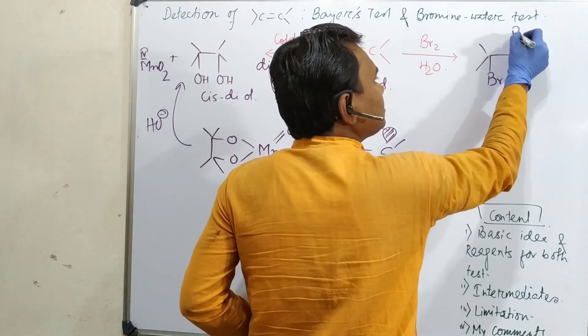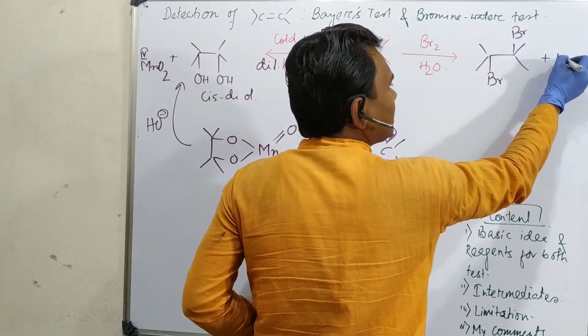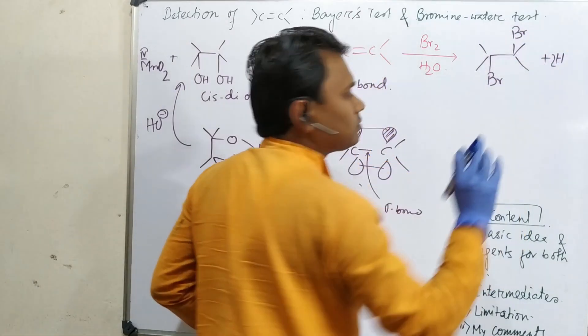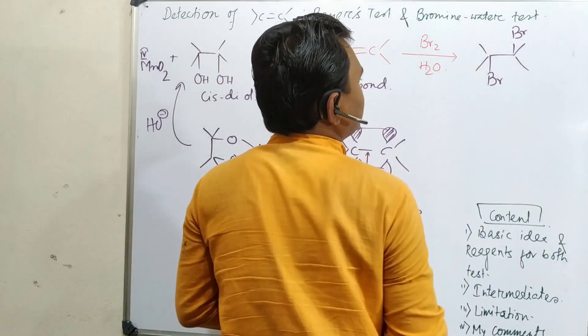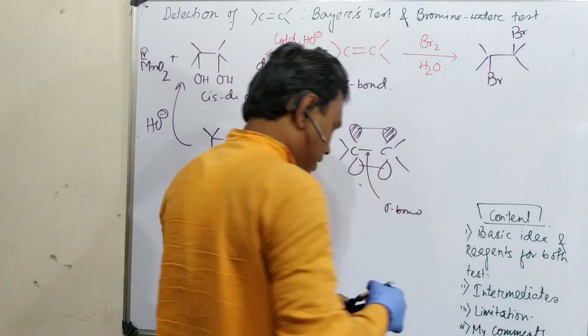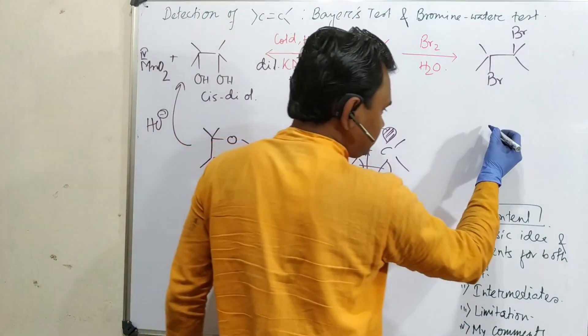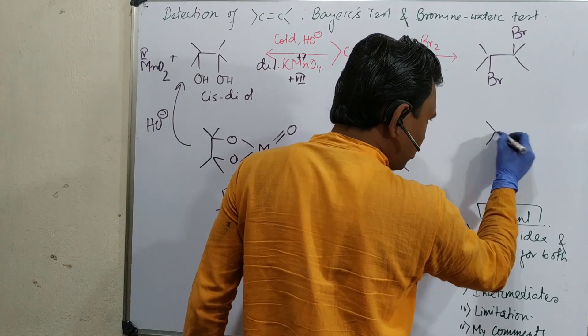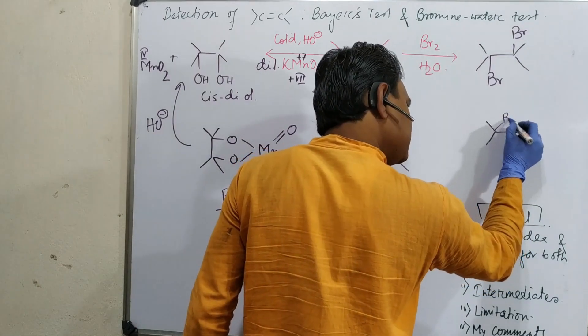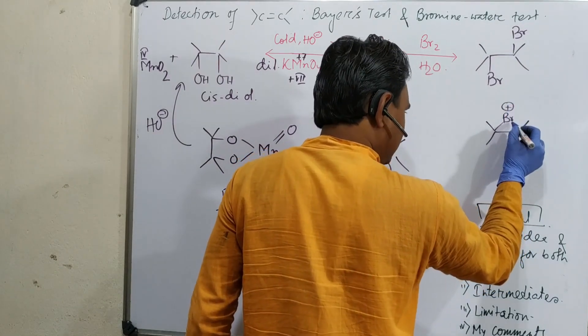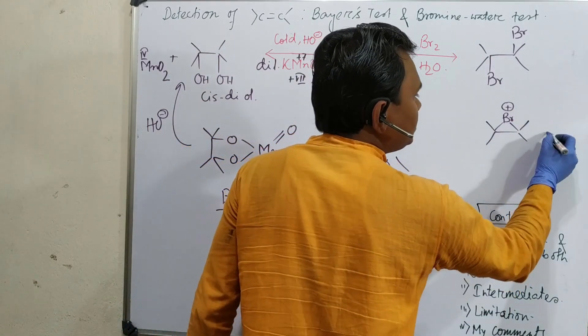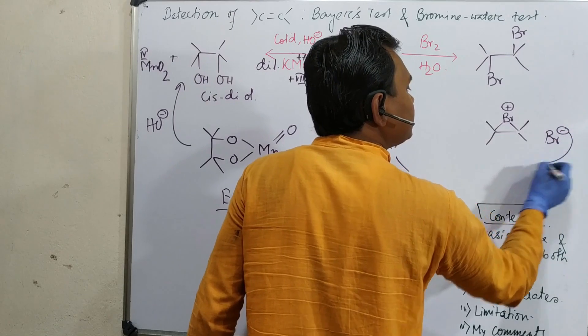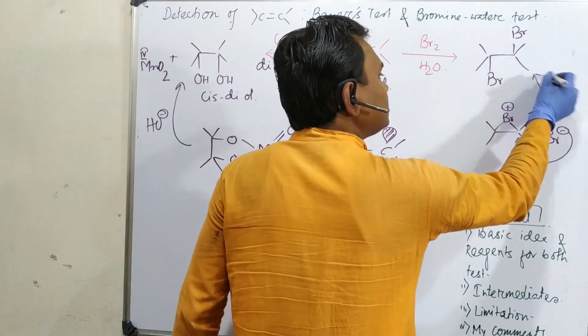Bromine water produces trans-dibromide. It is a simple addition reaction. Now what is the interesting point? The intermediate is a bridged bromonium ion. I have already discussed this part in details previously. Please visit that video if you want to learn the details.